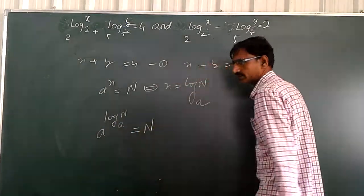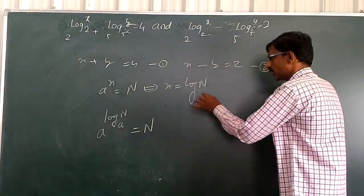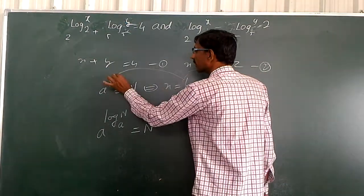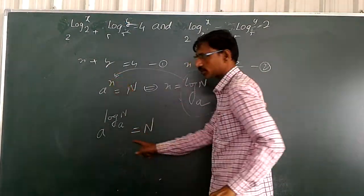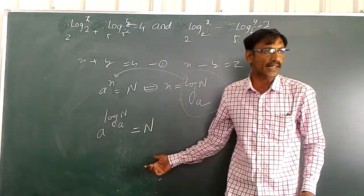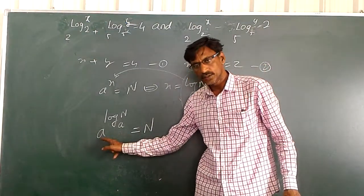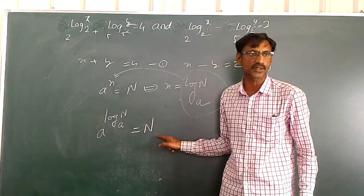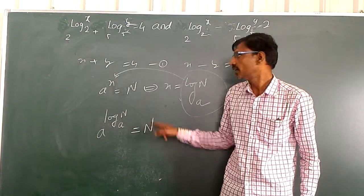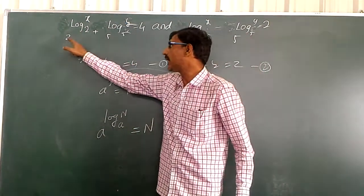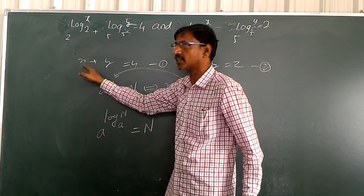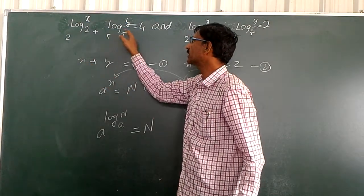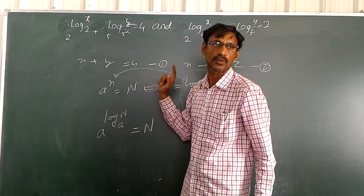This equation of y and r as set. This equation of x value. So, this equation of x value is equal to the power of x value. Same is equal to x. X plus y is equal to 4. Same is equal to y is equal to 4.